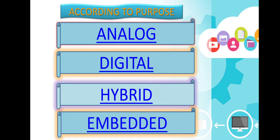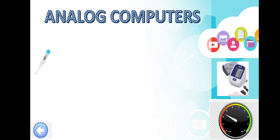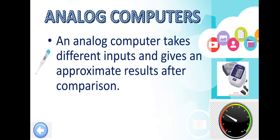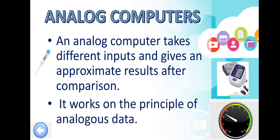Analog computers take different inputs and give approximate results after comparison. They work on the principle of analogous data, representing data in the form of continuous electrical signals having a specific magnitude.